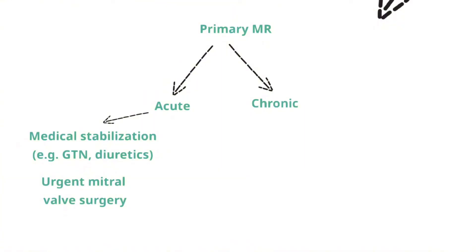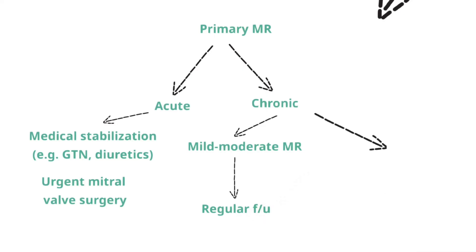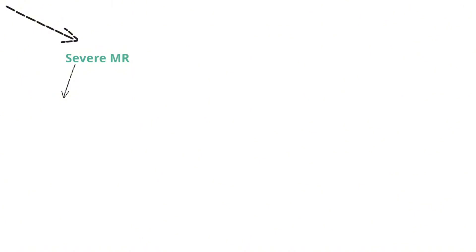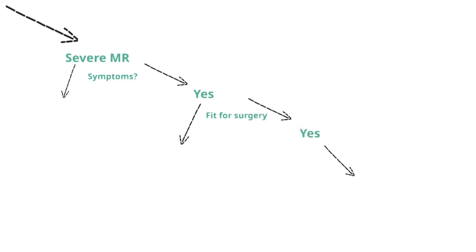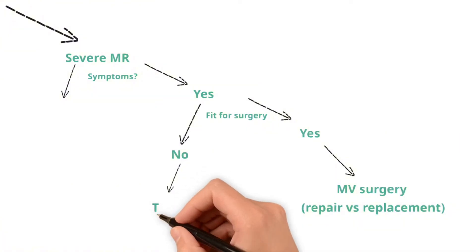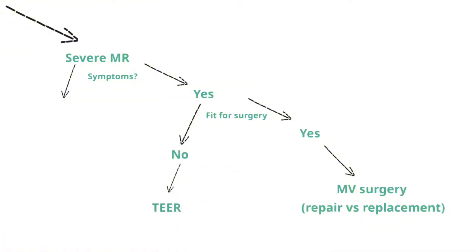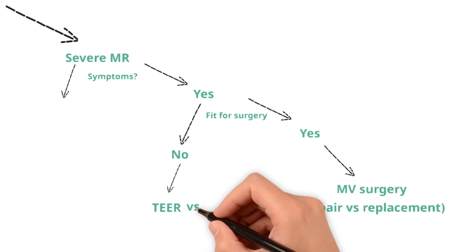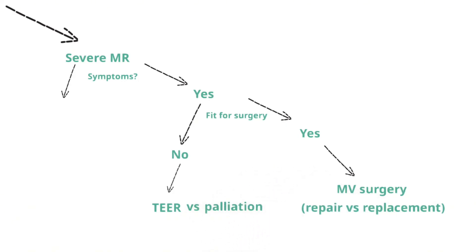In contrast, the management of chronic primary mitral regurgitation depends on its severity. Mild and moderate disease is usually followed up with regular echocardiography and clinical assessment. In severe chronic disease, the most important question is whether the patient is symptomatic. If they are, surgical valve intervention — usually valve repair or replacement — is usually recommended. Patients at a prohibitively high surgical risk may be eligible for a relatively new percutaneous technology called transcutaneous edge-to-edge repair of the mitral valve, or TEER for short. However, patients with multiple comorbidities or who are approaching end of life for other reasons are usually palliated, as any form of intervention is usually considered futile in this cohort.